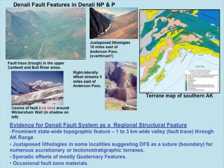In places, there are right-laterally offset features. One of the nicer ones in the park is a couple of streams not far from Anderson Pass to the east, offset a couple hundred meters at least, with well-exposed bedrock in that area. And then the Wickersham Wall, the Gunsite Pass area of Denali itself, where the fault actually arcs around the corner — the bend that Peter referred to.